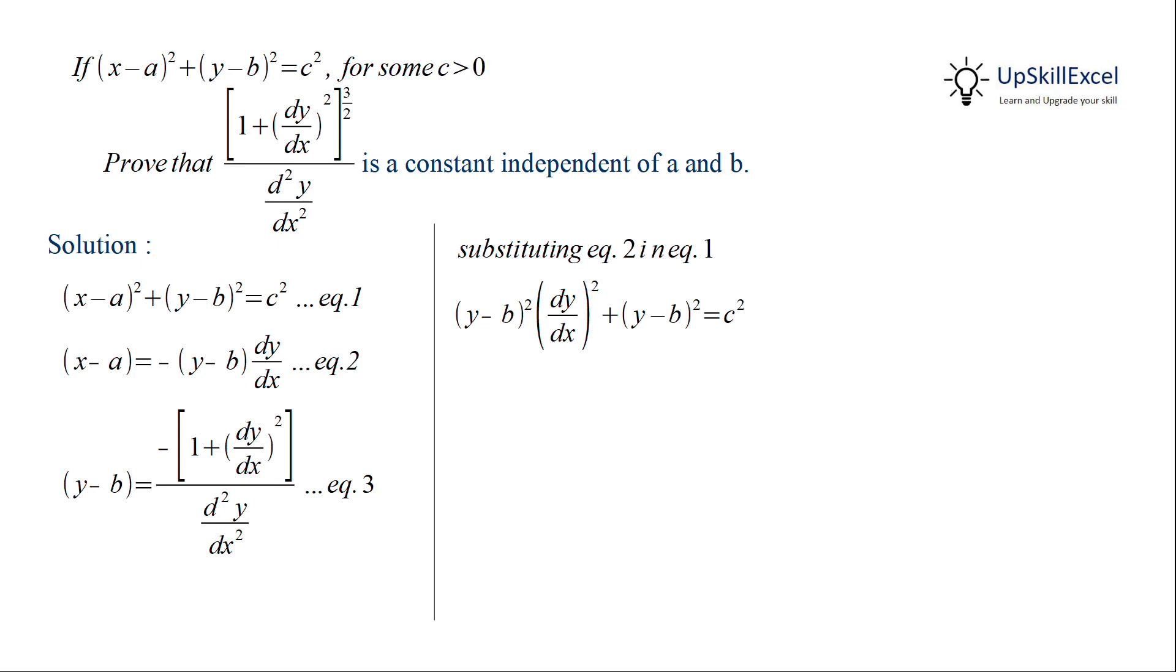Now we can take (y - b)² common and then take the square root on both sides.